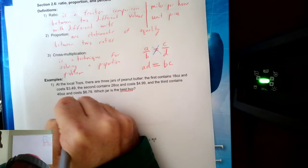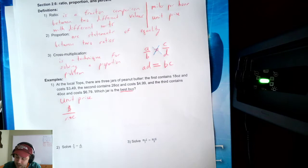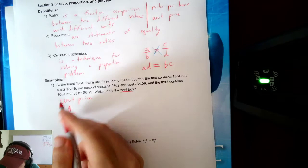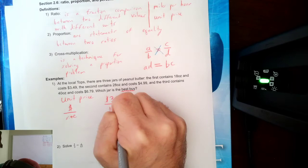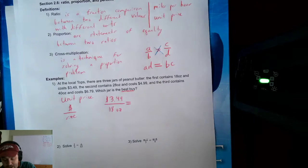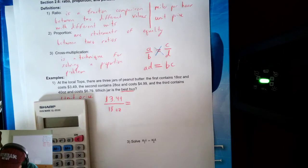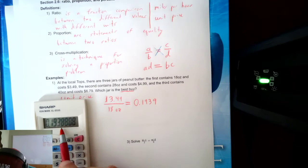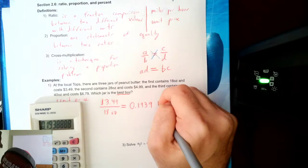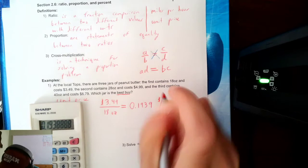Unit price is always dollars over size. Let's look at the first jar's unit price. The first contains 18 ounces and costs $3.49, so I put $3.49 in the top and 18 ounces in the bottom. 3.49 divided by 18 gives me 0.193 — rounding up because of the 8 after it, that's about 0.194. The units are dollars per ounce, so it costs about 19 cents for every one ounce of peanut butter for this first jar.